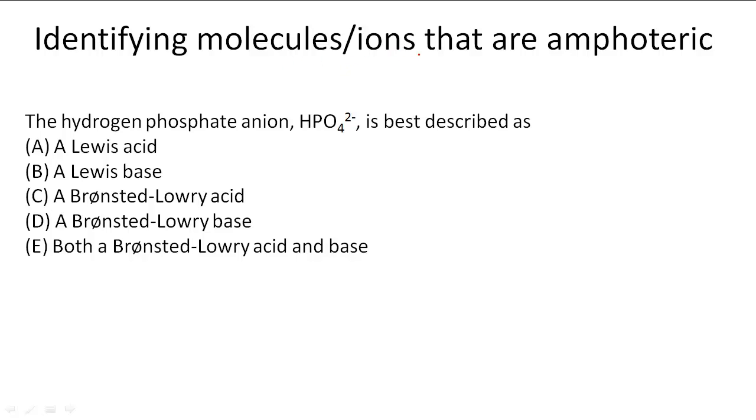Identifying molecules or ions that are amphoteric. In this problem, the hydrogen phosphate anion, HPO4^2-, is best described as: a Lewis acid, a Lewis base, a Bronsted-Lowry acid, a Bronsted-Lowry base, or both a Bronsted-Lowry acid and base.